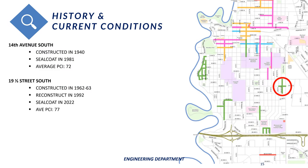Now I'll go over project-specific information about what we're proposing to do in your neighborhood. 14th Avenue was originally constructed in 1940, and 19th and a half Street was built between 1962 and 1963. In 1981, 14th Avenue received a seal coat, and in 1992, 19th and a half Street was reconstructed. Many of the ADA ramps in the project area are non-compliant and will be replaced. There are also some areas of sidewalk that will be replaced for ADA compliance, though we will not be replacing all sidewalk within the project area. There is a sidewalk gap that we are proposing to fill in, which will be discussed in more detail later.